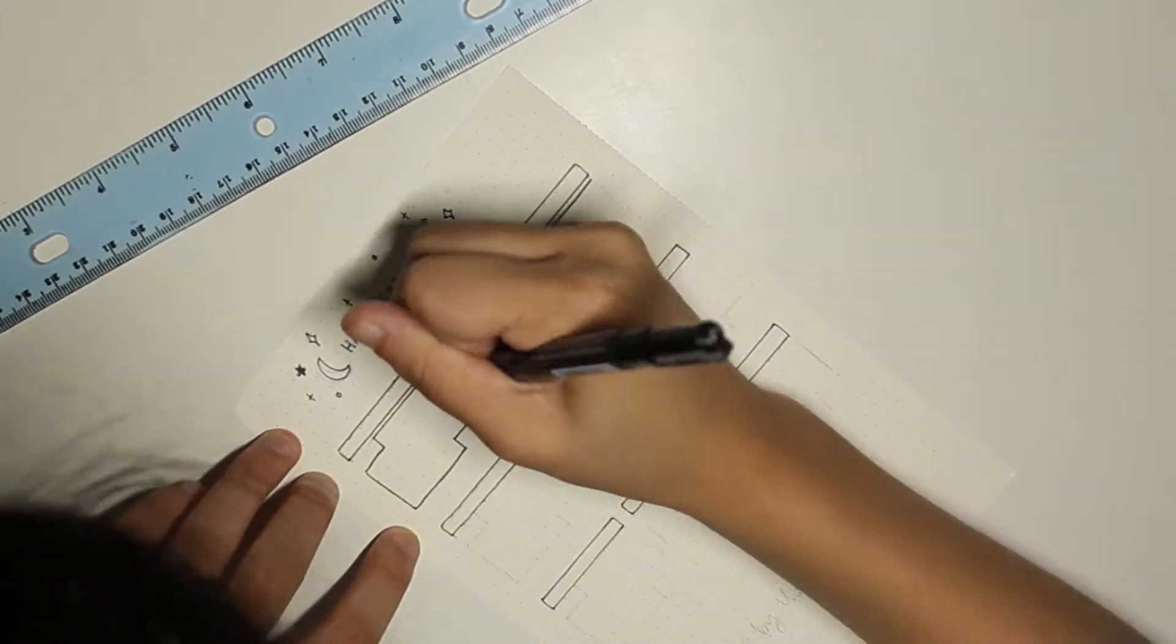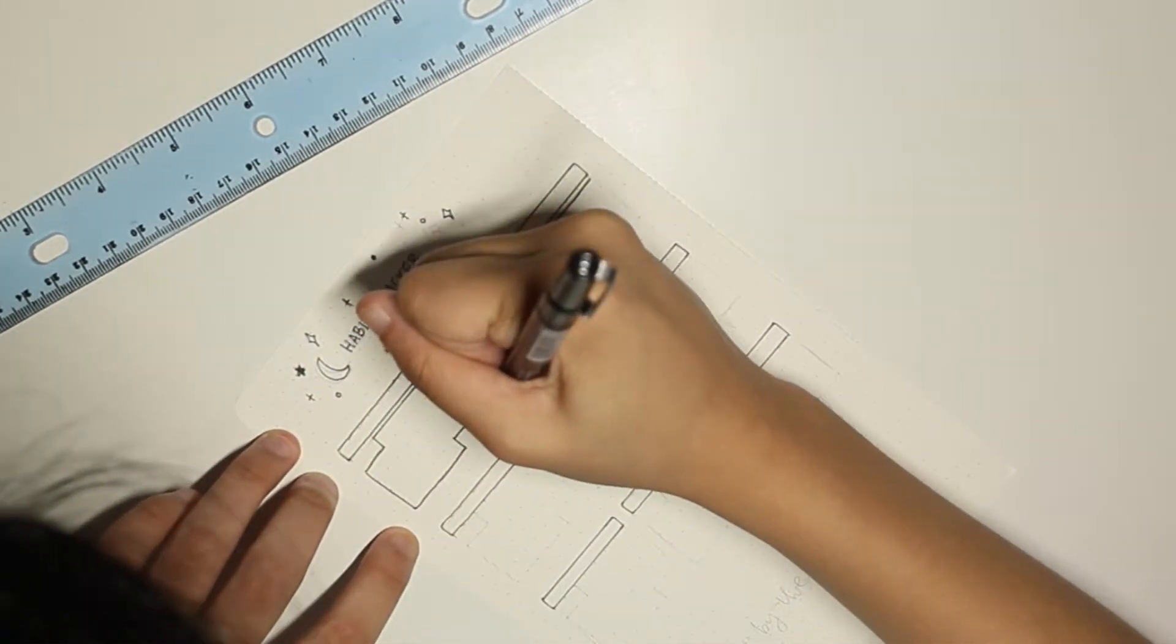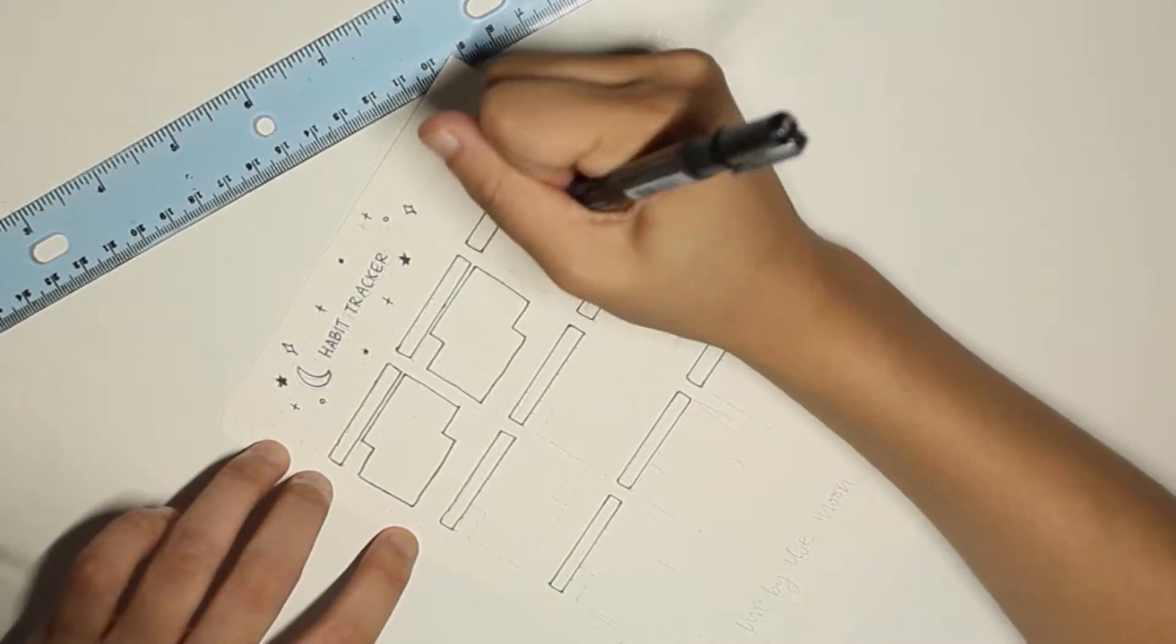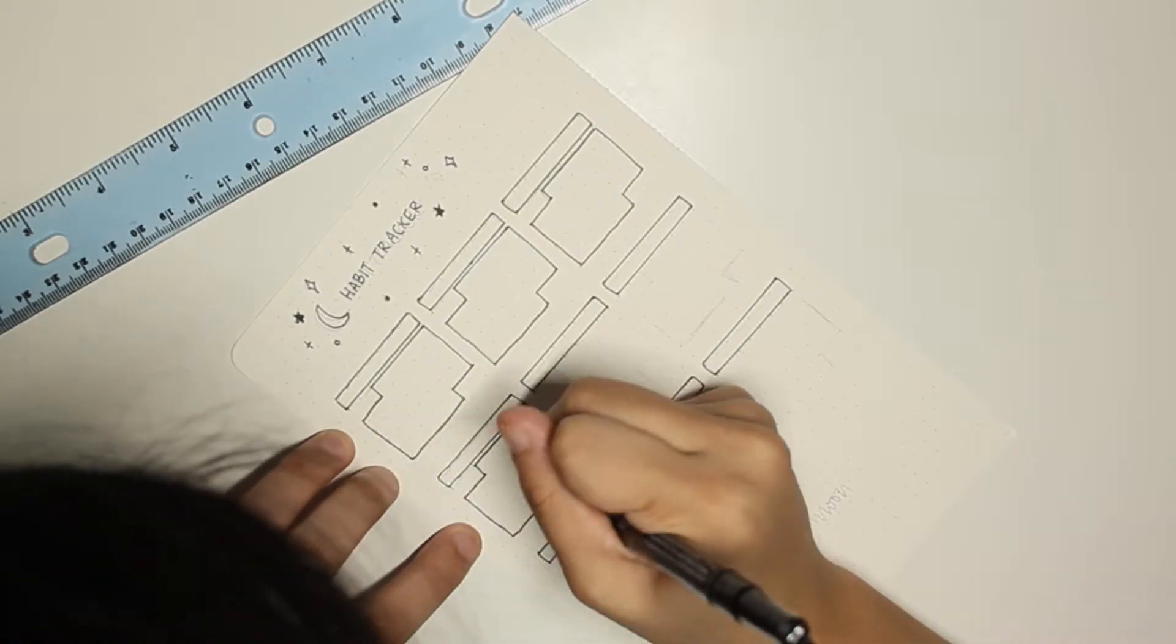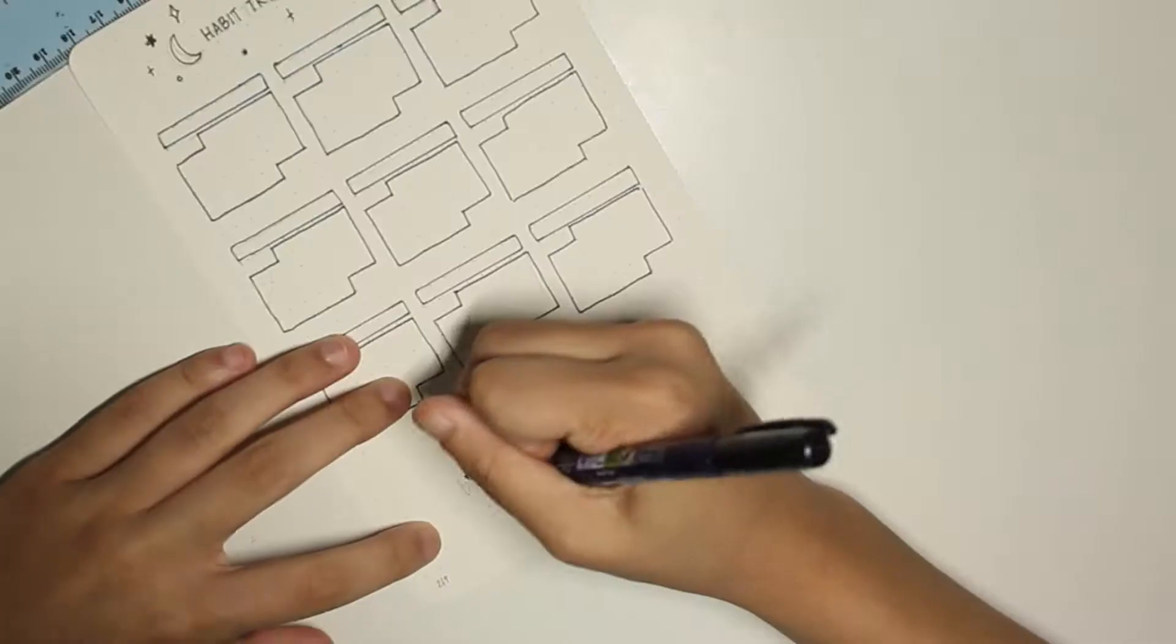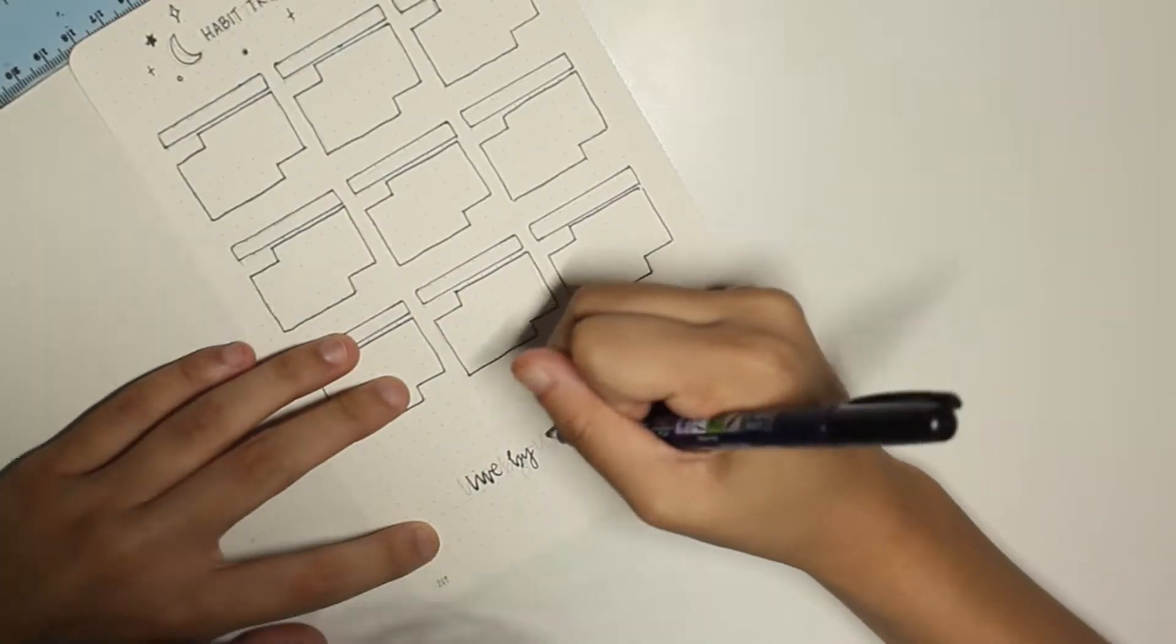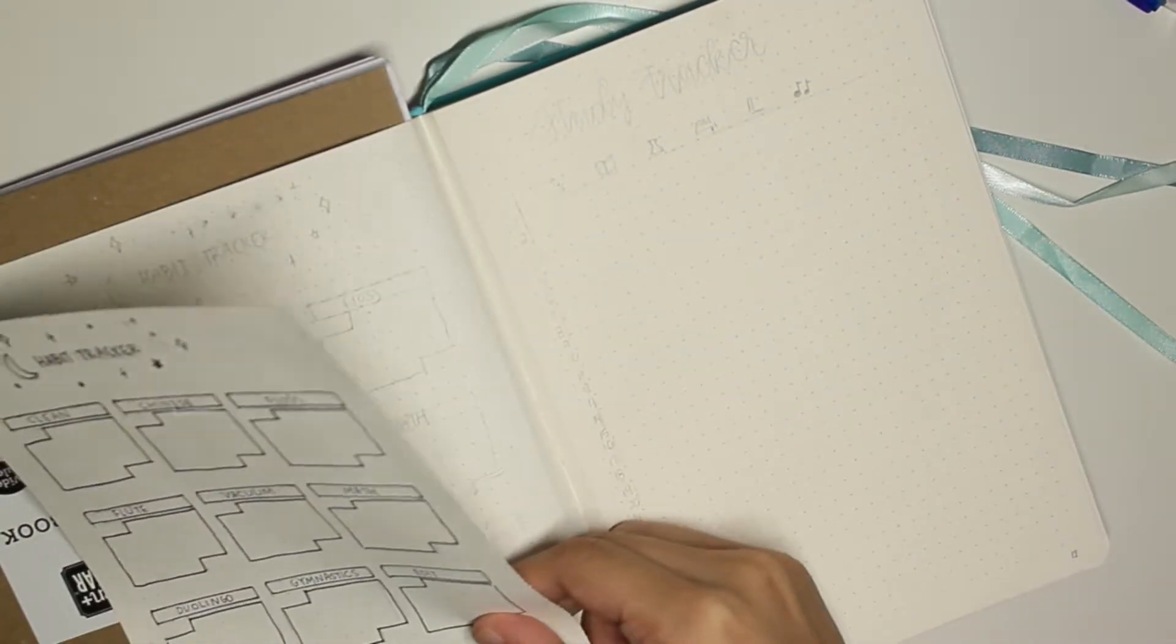I also always forget to fill out my habit tracker so this month I'm actually going to try to fill out the entire month. I also put my flute on there as one of my habits because I really want to start practicing more often. On the bottom I did what Amanda did and I wrote the quote 'live by the moon' which I really like. After I was done I glued it into my journal.